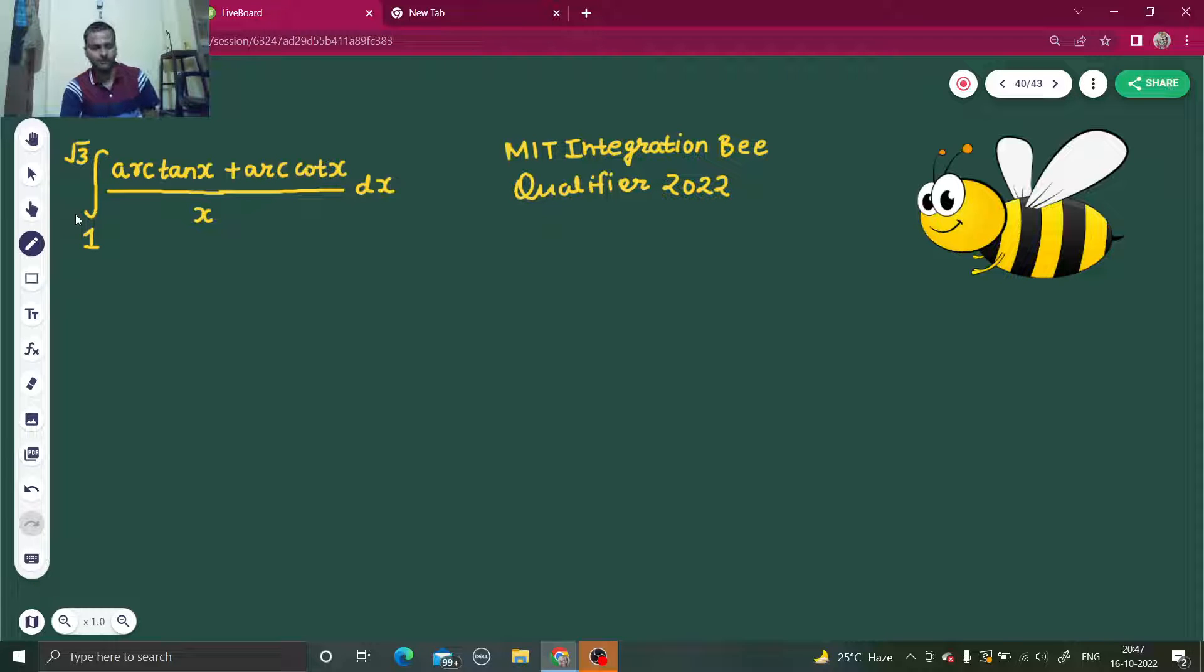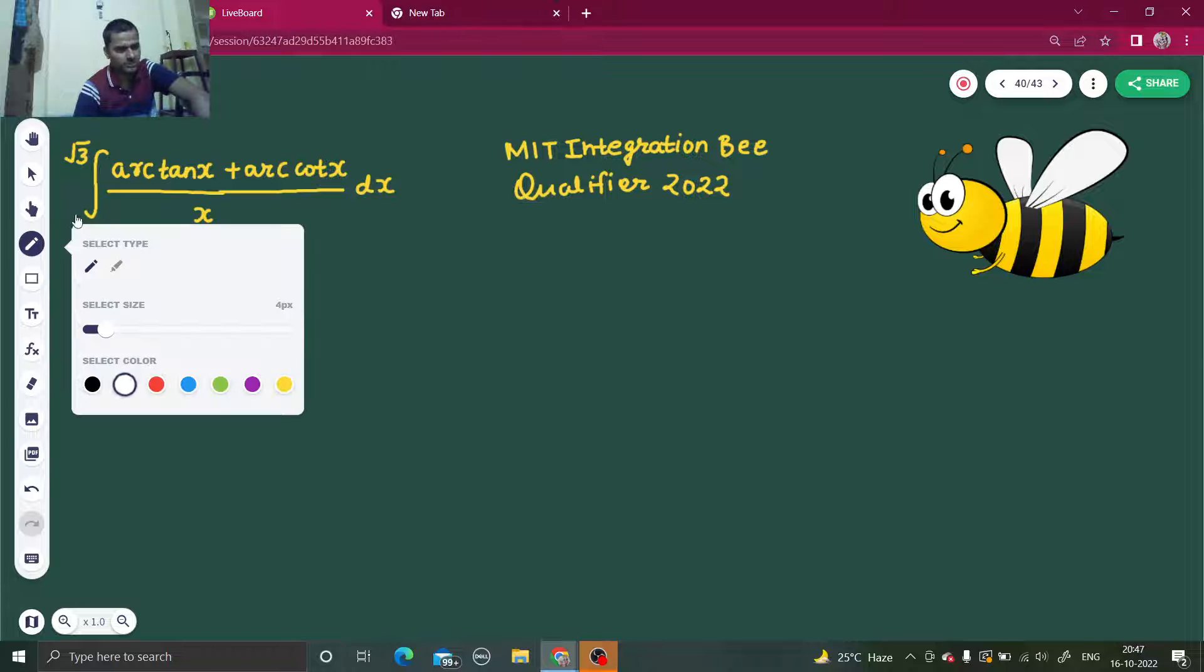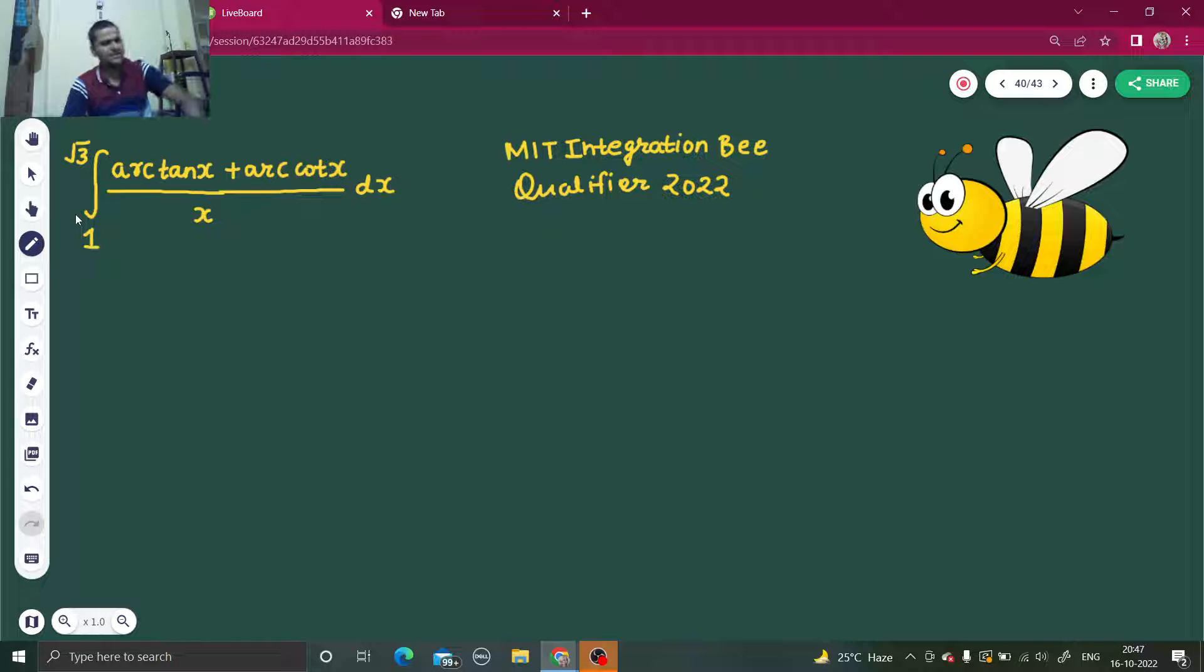This is a question where you can just shrink the question using the properties. Just a few steps, not a single step you can say, just you can visually solve the integral. Just for putting the limit you need to use your pen.